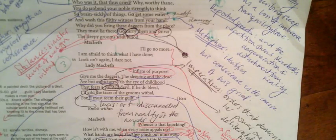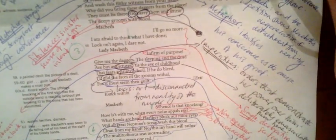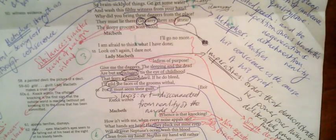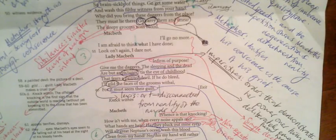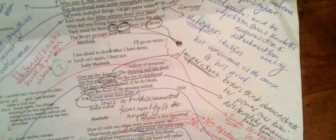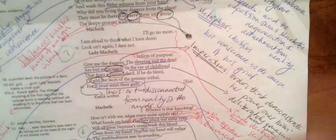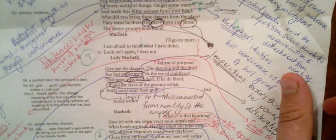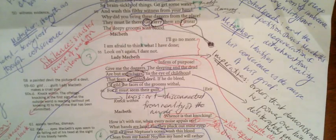She says 'Why did you bring these daggers from the place?' She's concerned with the practical detail rather than the moral effect. She reminds him that he's supposed to leave the daggers in the building. Then she says 'Go carry them and smear the sleepy grooms with blood.' These are all imperatives, demonstrating her power over him, and that sibilance in 'smear the sleepy grooms' gives a sense of her pleasure in this particular action.